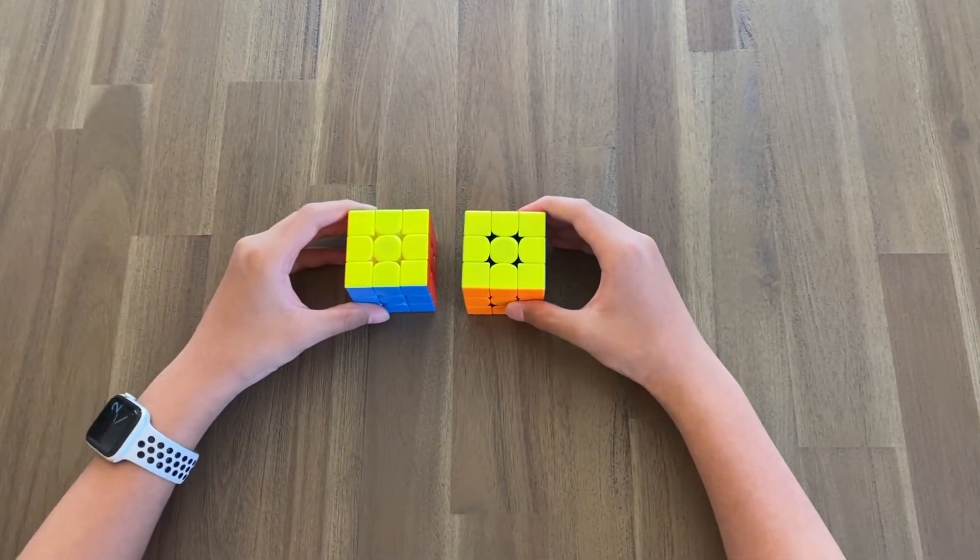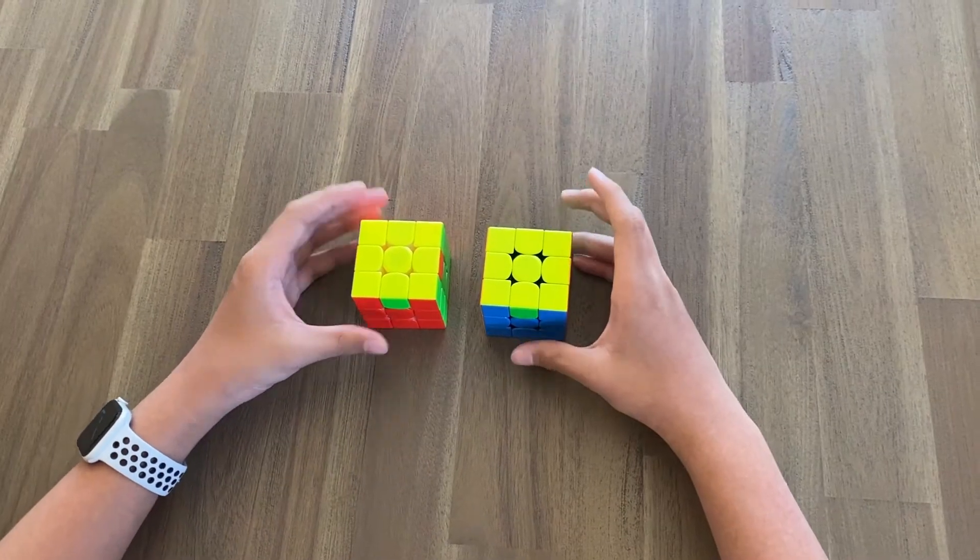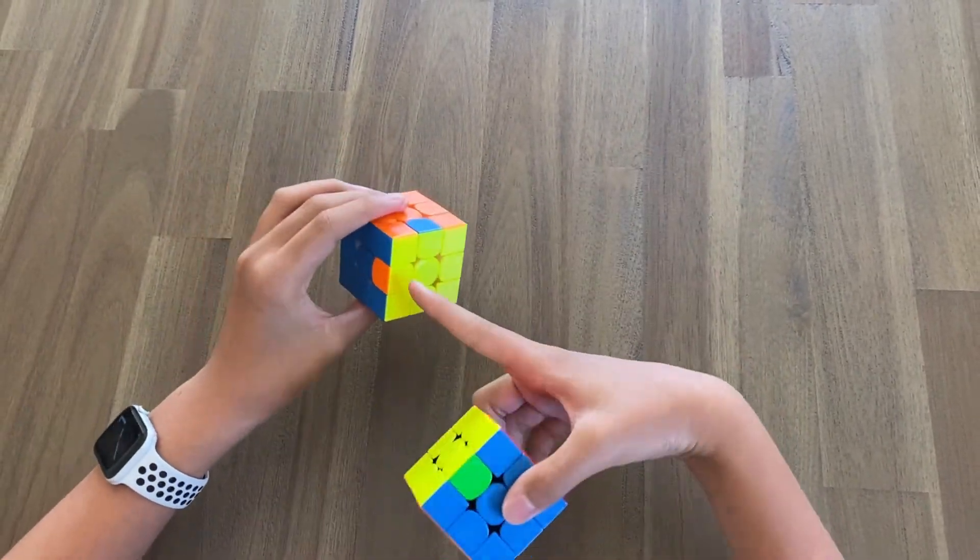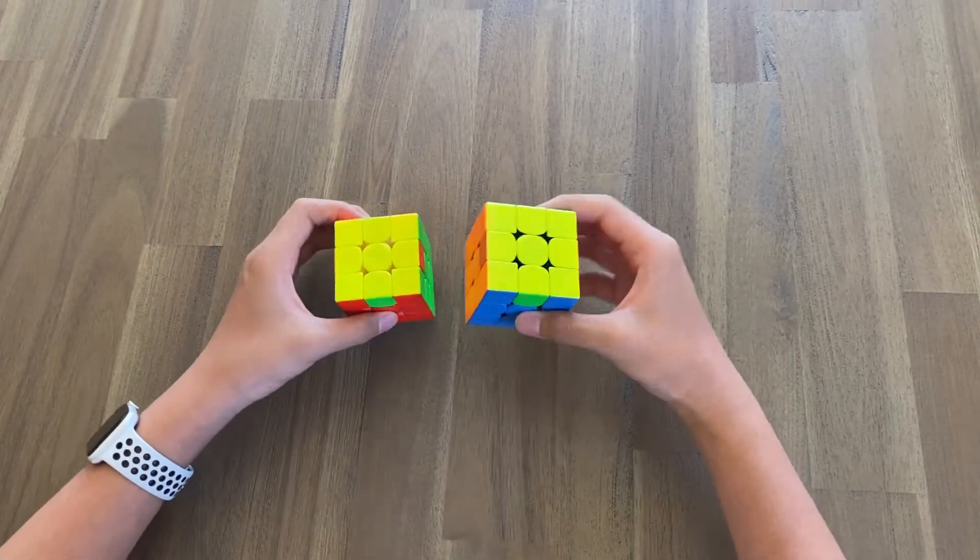As I was saying before, there are two more cases you can run into. This one's a Z perm, where these two edges are switching and these two edges are switching. And of course you also have the H perm, where these two edges are switching and these two edges are switching.